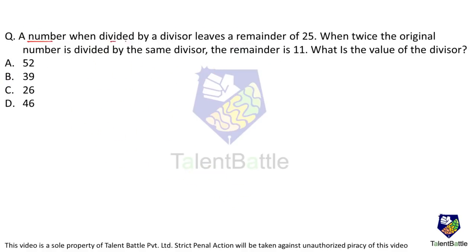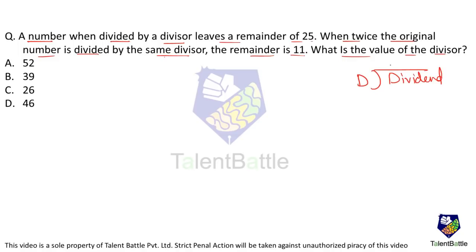A number when divided by a divisor leaves a remainder of 25. When twice the original number is divided by the same divisor, the remainder is 11. What is the value of the divisor? Let us recall how division works: the dividend equals the divisor times the quotient plus the remainder — that is, the remainder is the part left over.